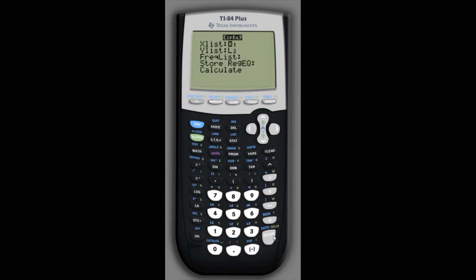as long as we've entered the x's, the years, in list one, we call them t, but the calculator calls them x's, and then the population values in list two, which the calculator calls y. As long as we've done that in that order, we don't have to change anything here. So we can just scroll down to calculate,